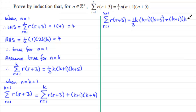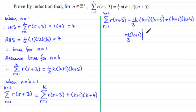Now we tidy this up. We need a third at the front and a factor of k plus 1. Forcing a third and k plus 1 out as common factors, we get a third times k plus 1, and inside a square bracket we have k times k plus 5 from the first term, plus 3 times k plus 4 from the second term.